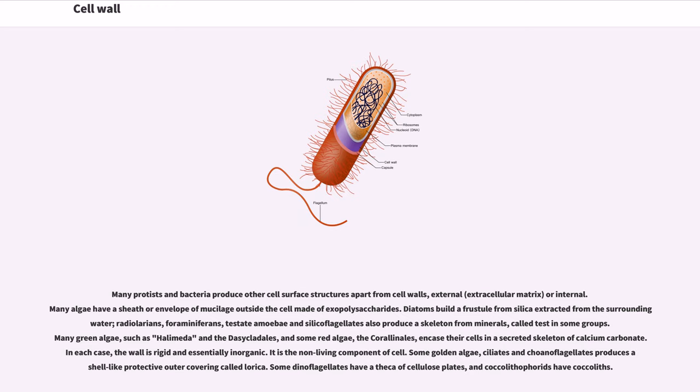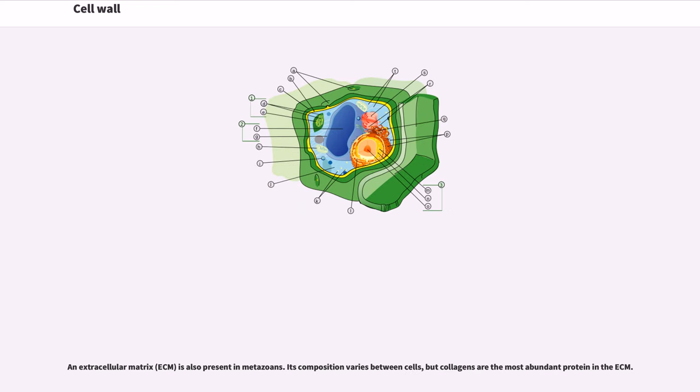Some golden algae, ciliates and choanoflagellates produce a shell-like protective outer covering called a lorica. Some dinoflagellates have a theca of cellulose plates, and coccolithophorids have coccoliths. An extracellular matrix (ECM) is also present in metazoans. Its composition varies between cells, but collagens are the most abundant protein in the ECM.